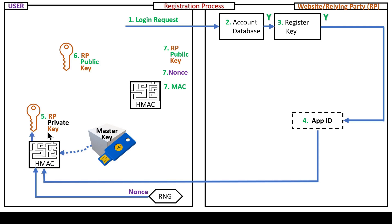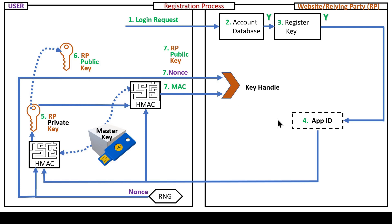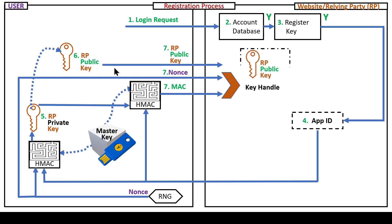The output of that generates the private key and a corresponding public key. That private key along with the app ID and embedded master key are all hashed together. The output of that is the message access code, which along with the nonce is sent back to the service provider in the form of a key handle. In addition, the public key is also transmitted and registered with the relying party website or service provider.